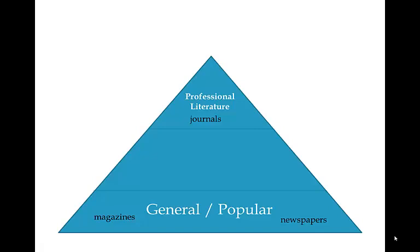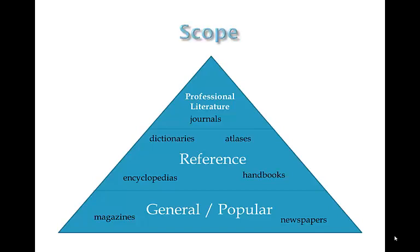However, since journal articles are written by and for professionals, they assume their readers have extensive background in the discipline, so they may be difficult to understand. Reference materials are available to help bridge the gap between the two levels of information. As you reflect on the various types of reference works, remember they have different purposes. Dictionaries focus on the definition of a particular word. Encyclopedias summarize what is known and provide a theoretical foundation. Handbooks are usually specific to a particular field within a discipline and focus on a specific application. Atlases provide maps and information about an area.